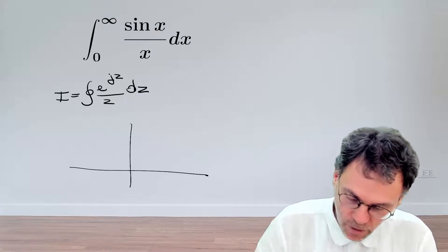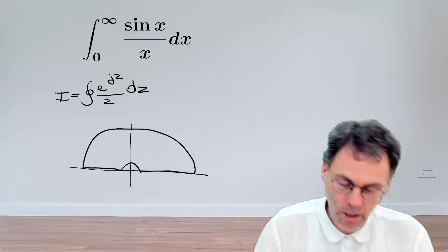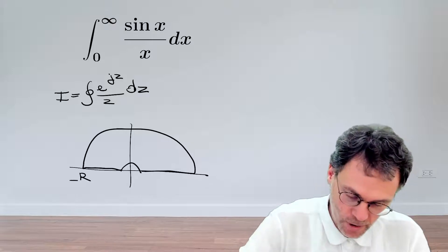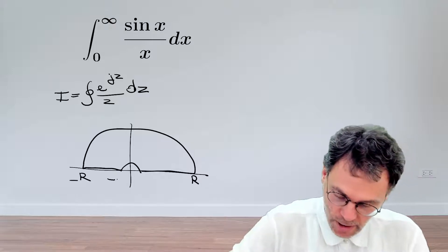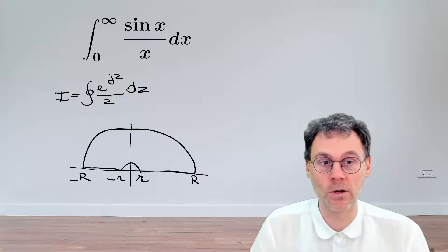So for that we settled on the following contour, like so, where we have a contribution of a big circular segment from minus big R to plus big R. And then also this little circle here to avoid the singularity at the origin.